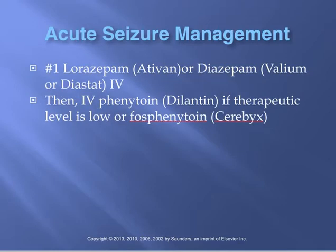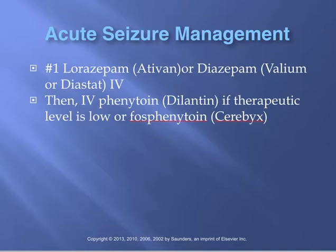Medication-wise, if someone is having a series of seizures, we need to stop it quickly to prevent status epilepticus. Anticipate and administer either IV lorazepam or IV diazepam — those are our first-line drugs to abort a seizure. After giving those, we may also consider a loading dose of phenytoin or another anti-epileptic medication.